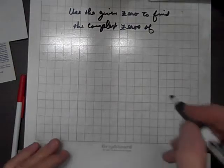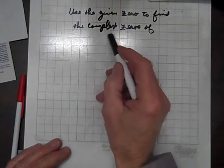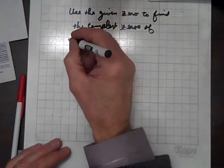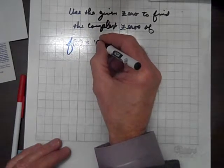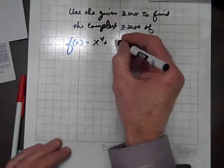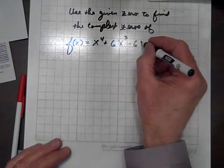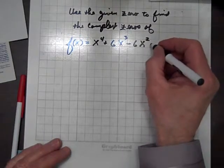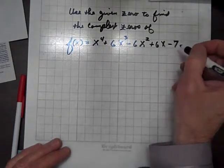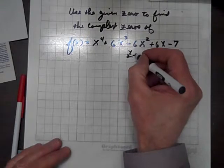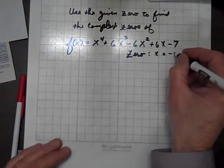Today, we're going to use the given zero to find the complex zeros of the polynomial f of x equals x to the fourth plus 6x cubed minus 6x squared plus 6x minus 7. The given zero is x equals negative i.